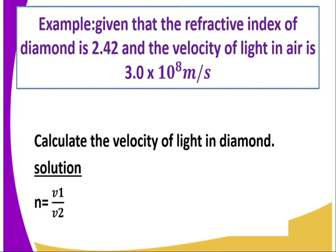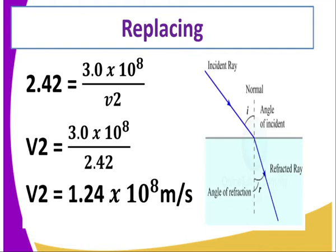How do we get the solution? Remember, the refractive index is equivalent to velocity of light in medium 1 divided by velocity of light in medium 2. So substituting appropriately, we get that the refractive index — which is 2.42 — is given by the velocity of light in air divided by the velocity of light in medium 2. By computing and making V2 the subject of the formula, it gives us a velocity of 1.24 × 10⁸ metres per second.